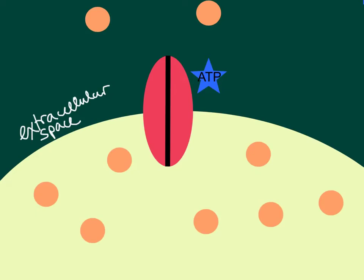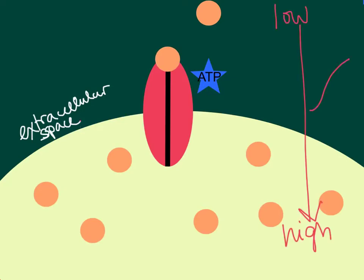So what's going to happen is this cell is going to have to actively transport these sugar molecules into the cell. Going from an area of low concentration to high concentration requires energy in the form of ATP. A molecule comes along and attaches to the integral transmembrane protein, but in order to get this sugar molecule from low to high concentration, you're going to have to use ATP. So the ATP molecule is used, goes away, and gets replaced by ADP.